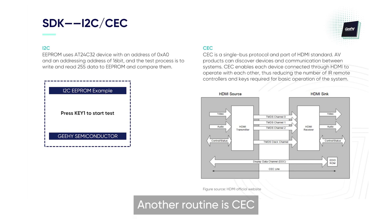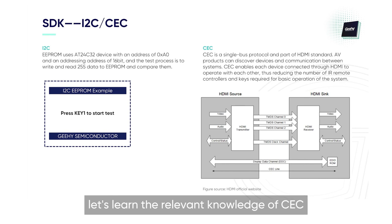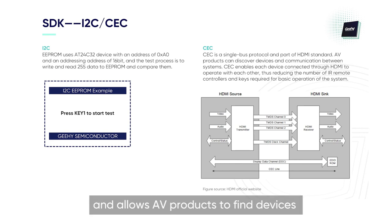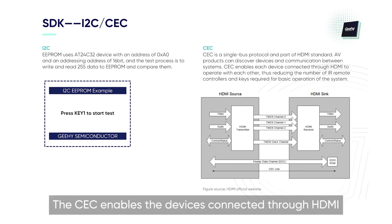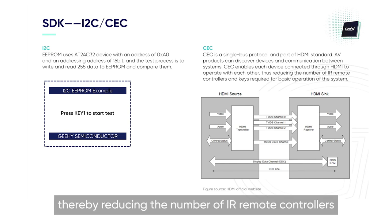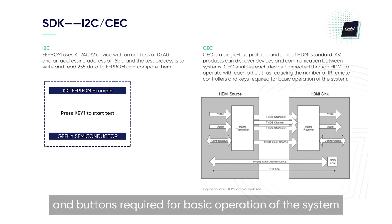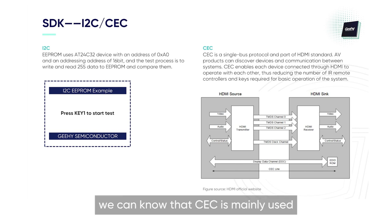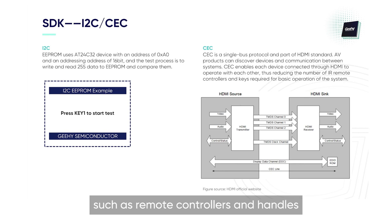Another routine is CEC. Before introducing the CEC routine, let's learn the relevant knowledge of CEC. CEC is a single-bus protocol, part of the HDMI standard, and allows AV products to find devices and communicate between systems. The CEC enables the devices connected through HDMI to operate each other, thereby reducing the number of IR remote controllers and buttons required for basic operation of the system. CEC is mainly used for the operation of HDMI devices, such as remote controllers and handles.